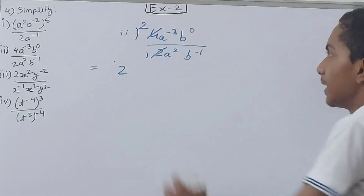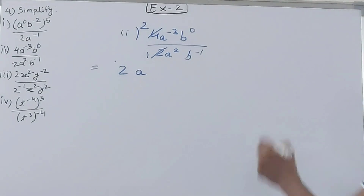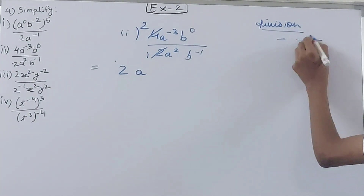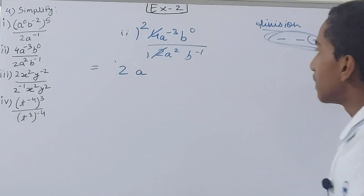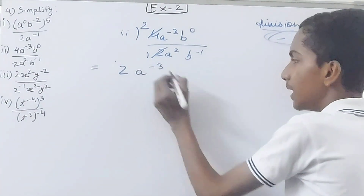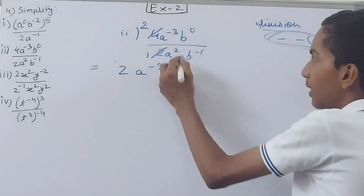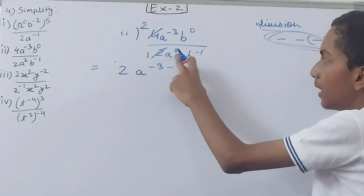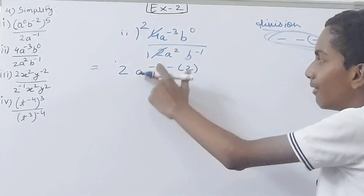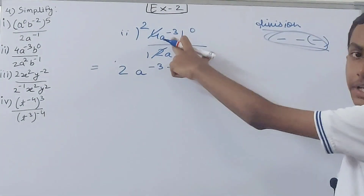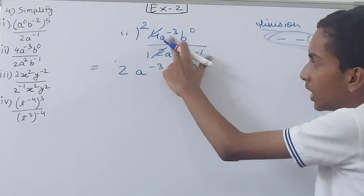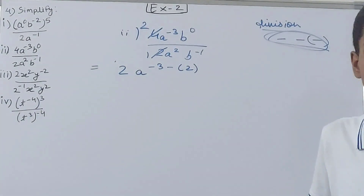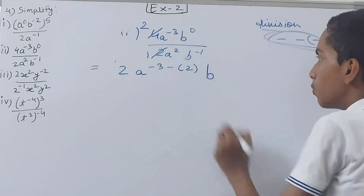For a: same base, different powers, we are dividing, so we subtract the exponent of the denominator from the numerator. The numerator exponent is minus 3 and the denominator exponent is 2 (a positive number), so we put it in brackets to avoid confusion: minus 3 minus (2).